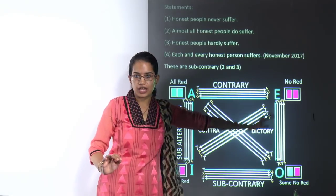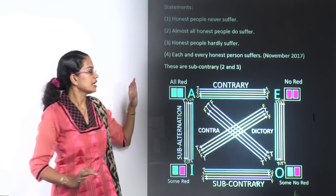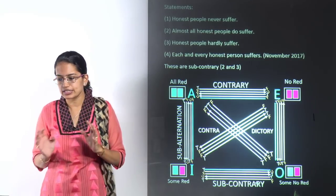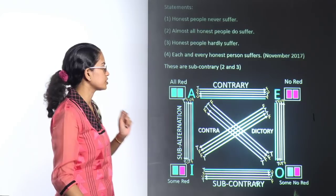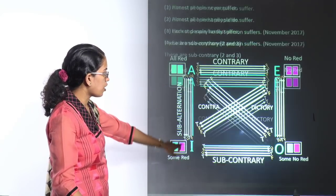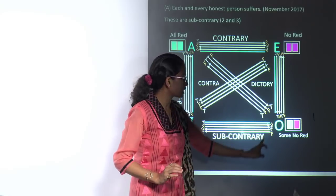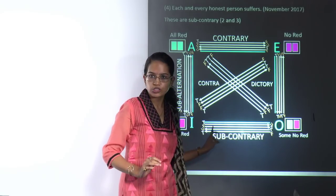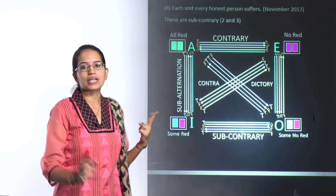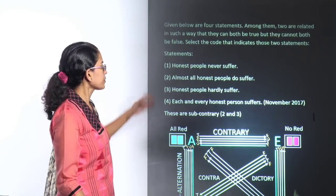In our classes we have understood how to work around square of opposition problems. Just with this single diagram you can understand how to solve them. When I look at the subcontrary, both can be true but both cannot be false together. So what two statements do I have to pick up? Some and some not — that makes the question very simple.